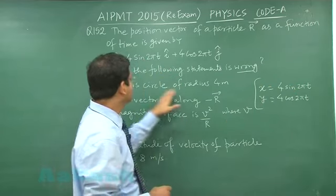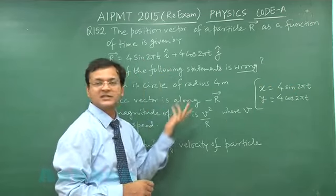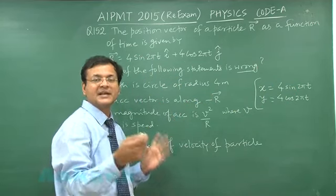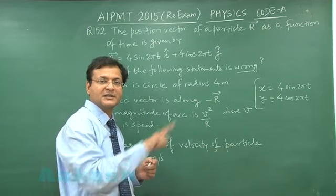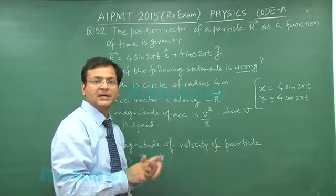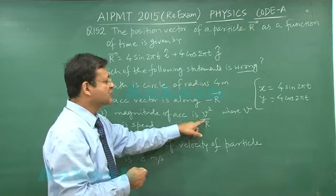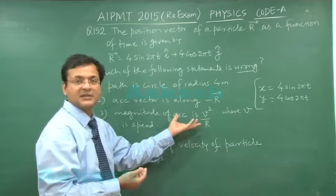Now see, the first statement says that path is circle of radius 4 meter. This is a true statement. Second, acceleration vector is along minus r. That will also be true because acceleration is centripetal one. So whatever is the position vector, opposite to that will be the acceleration. That is why it is known as centripetal. Third is magnitude of acceleration is v square by r. This is very much right because it is a circular motion.